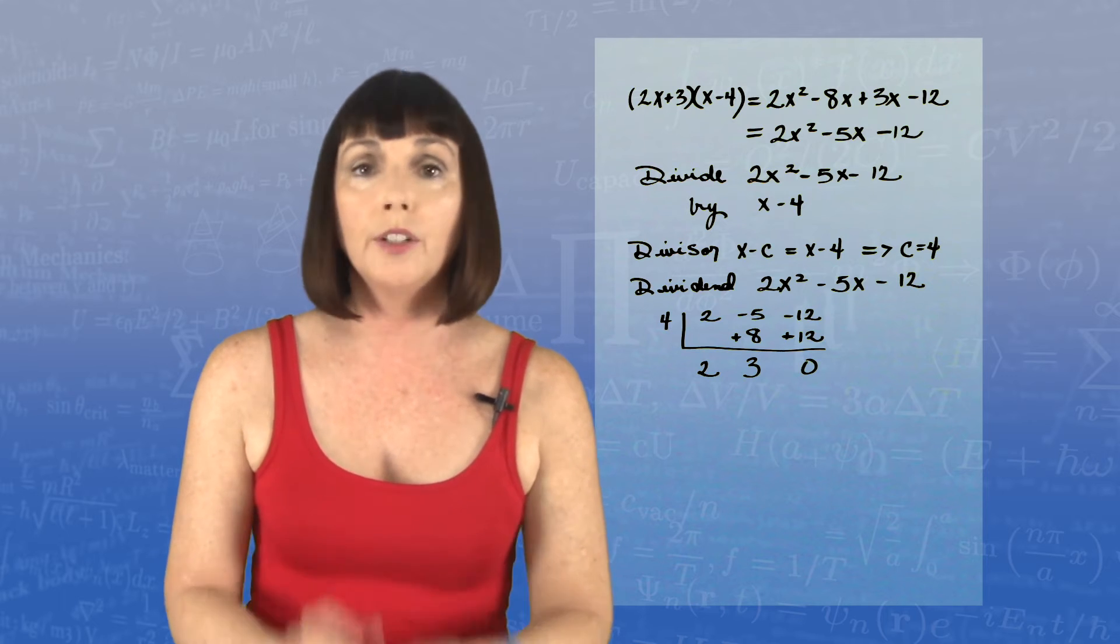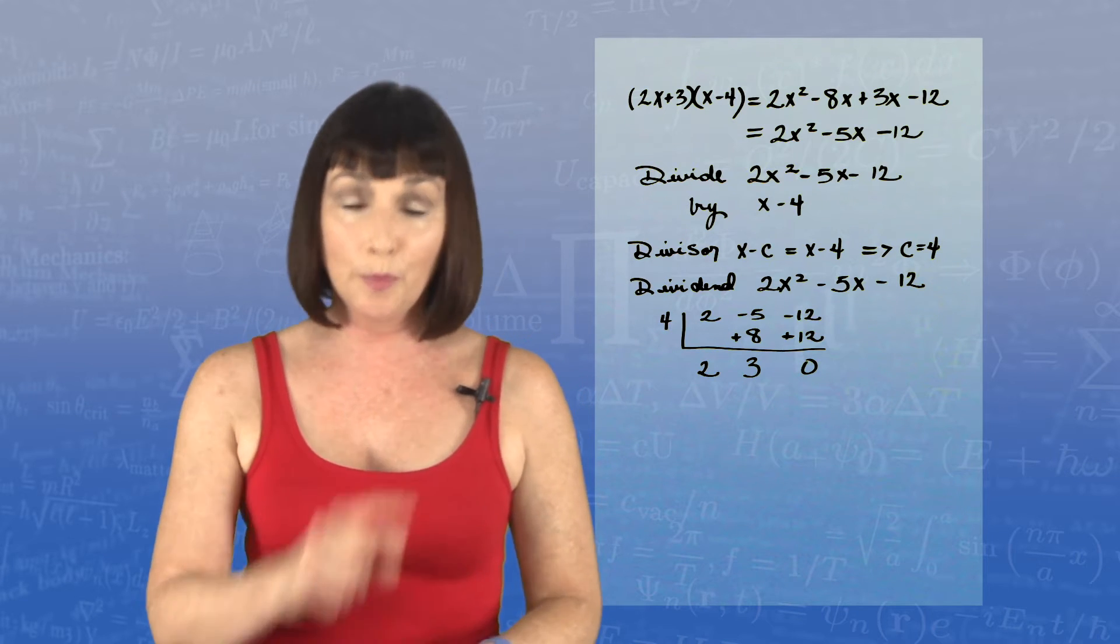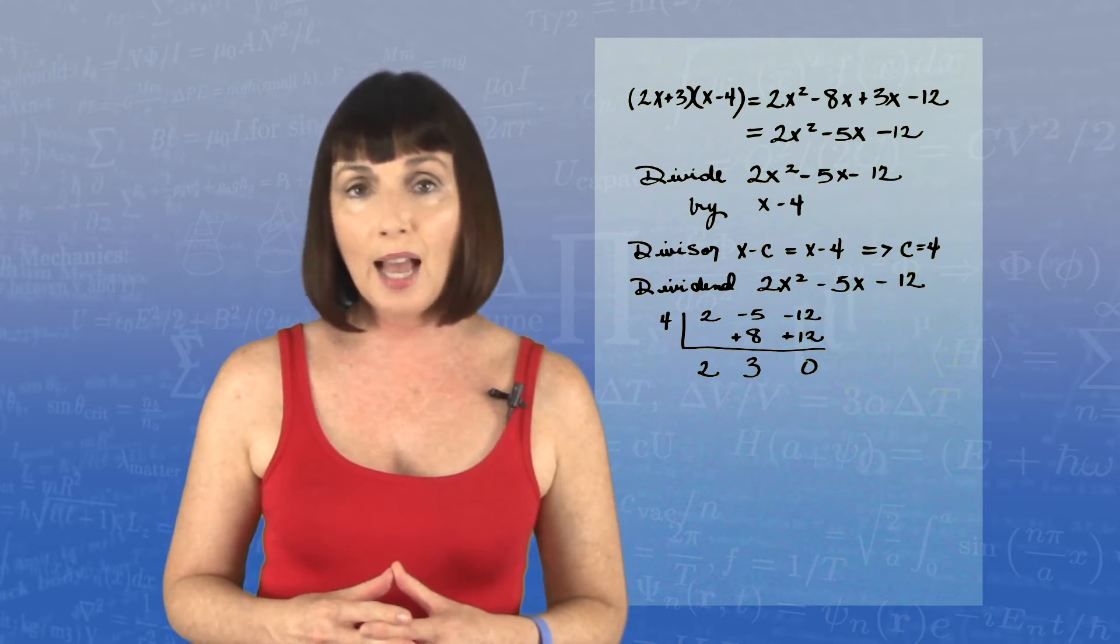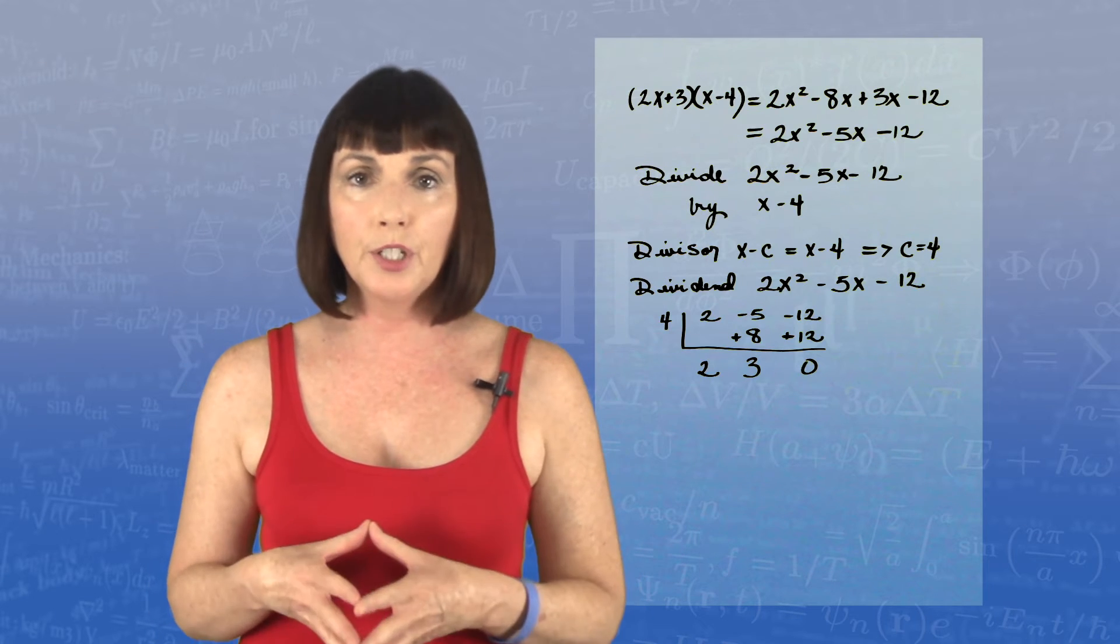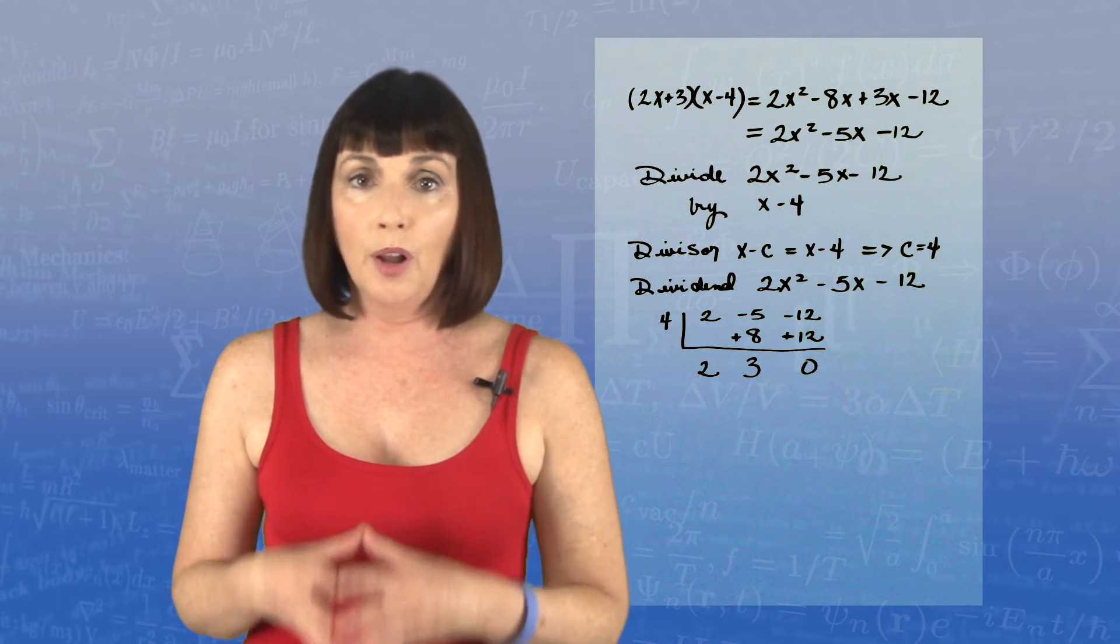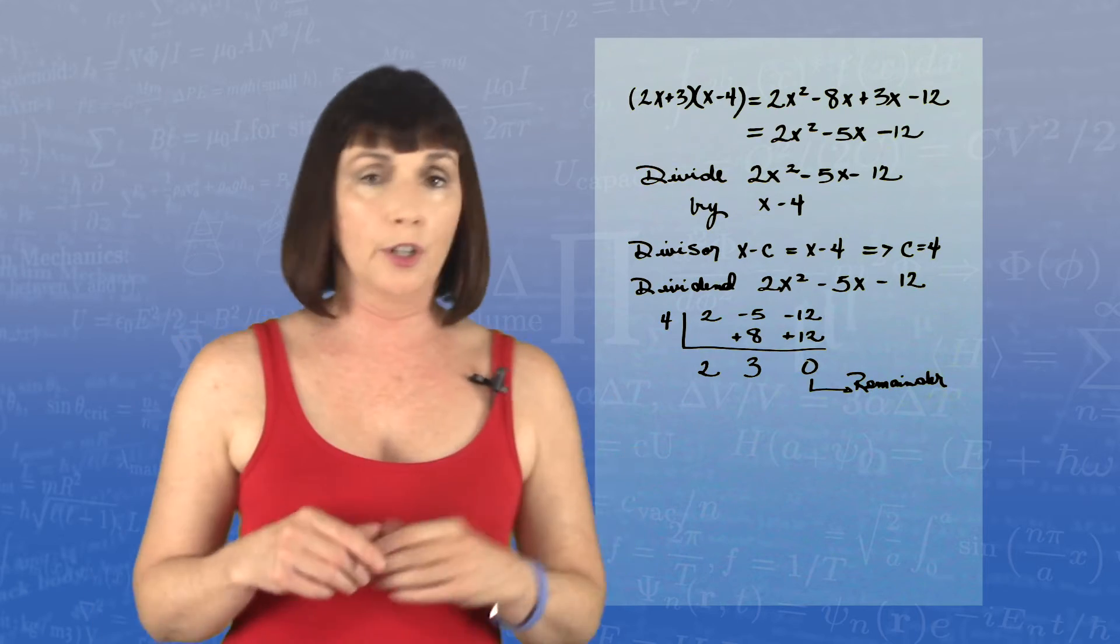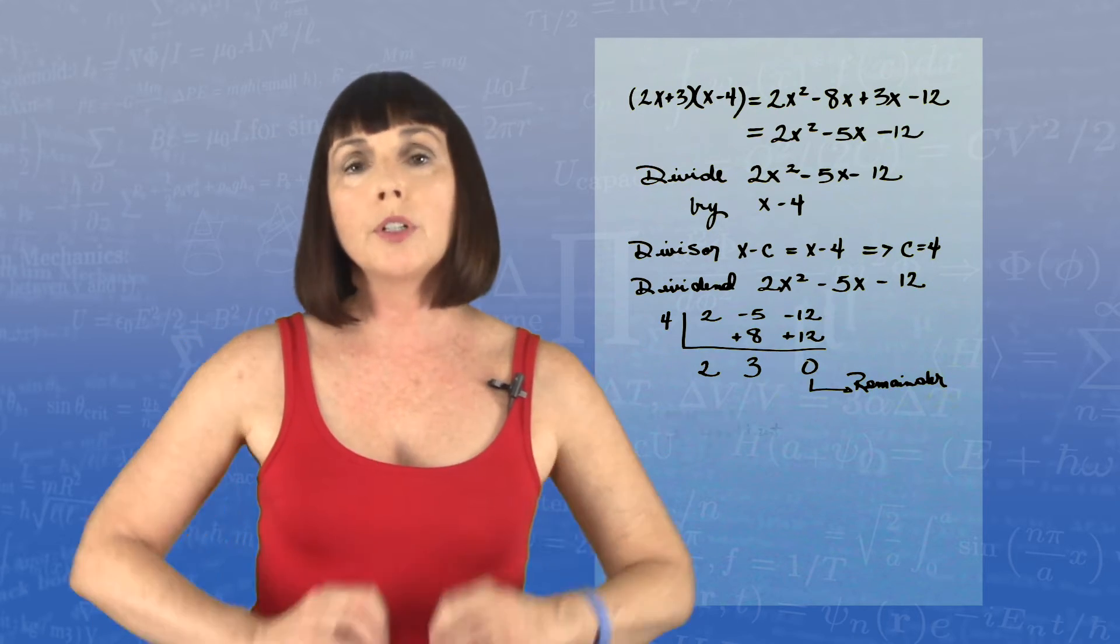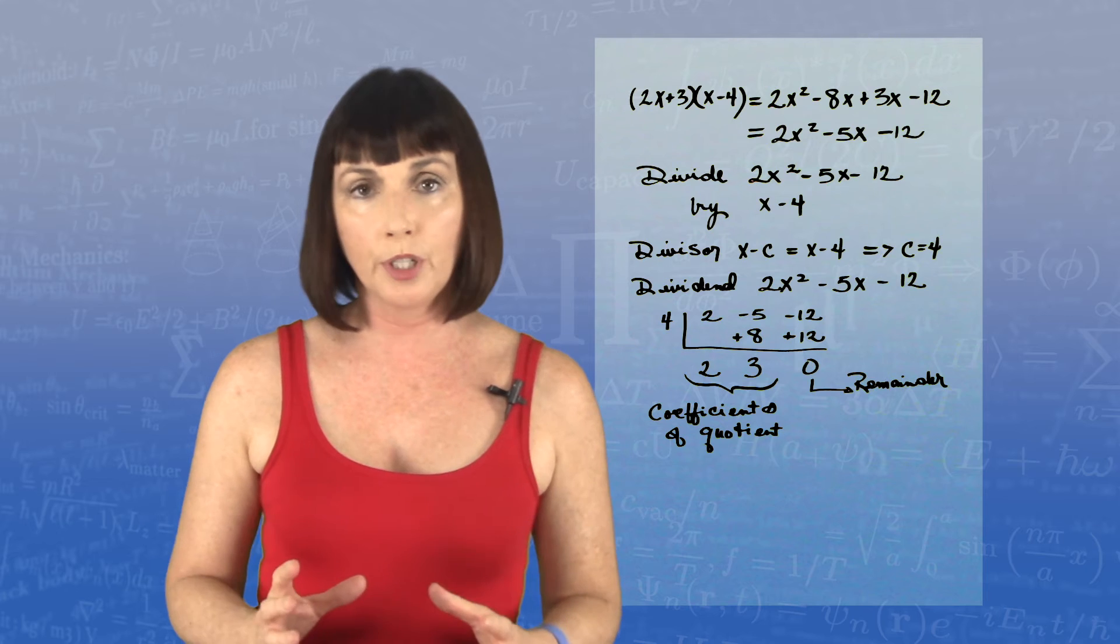That's our remainder. Now we would expect to get a remainder of 0 because we know x minus 4 is a factor. So here's what you get with synthetic division. That last number on the bottom is the remainder.